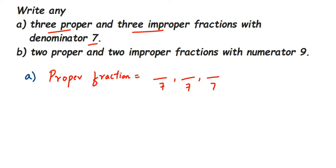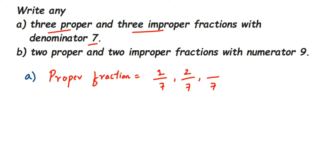Proper fractions are fractions where the denominator is greater than the numerator. So whenever you're choosing a numerator here, it has to be less than 7. You can pick any number less than 7 — let me take 1, 2, and 3. You could also take 4, 5, or 6. These become our three proper fractions.